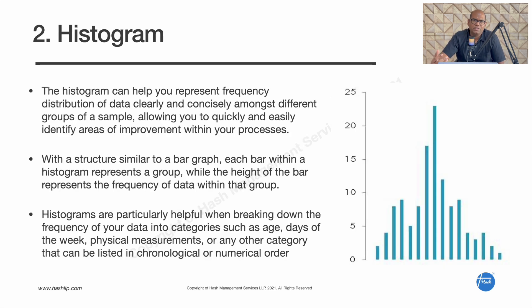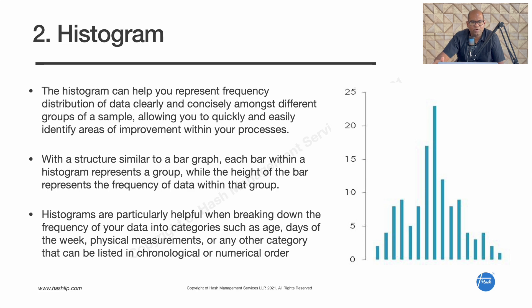The second tool is a histogram. A histogram is a way to represent data in a visual format so that we can find patterns in the data. It can help you represent the frequency distribution of data clearly and concisely among different groups of a sample, allowing us to quickly and easily identify areas for improvement. The difference between a bar chart and a histogram is that a histogram represents continuous data with a specific interval, while a bar chart can use discrete or non-continuous data.